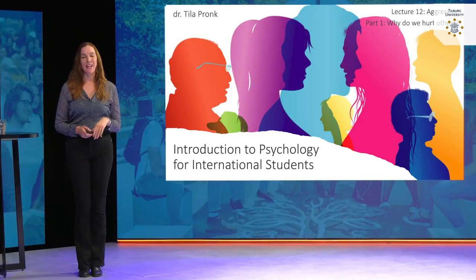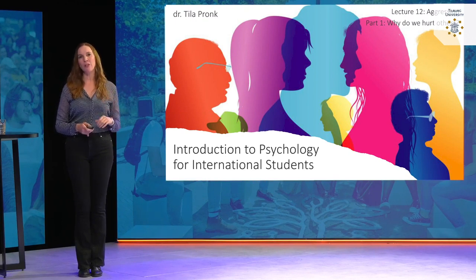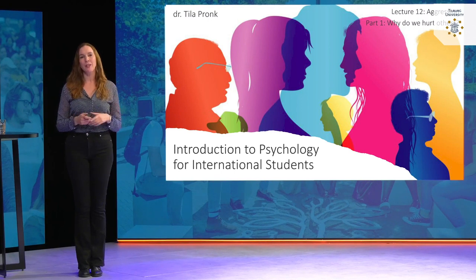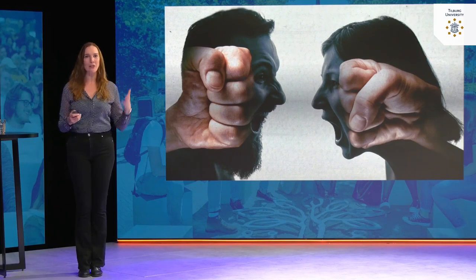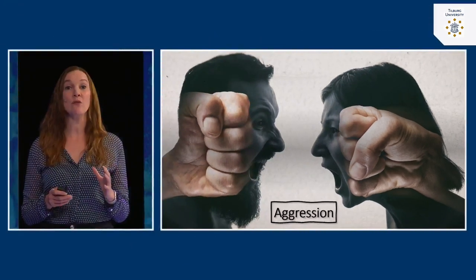This is lecture 12. In this lecture we're going to turn to the dark side of human behavior — we're going to talk about our tendency to harm others. In this part of the lecture we'll discuss why we have this tendency. There are several theories that can help us explain aggressive behavior, but let's start by giving a definition of aggression.